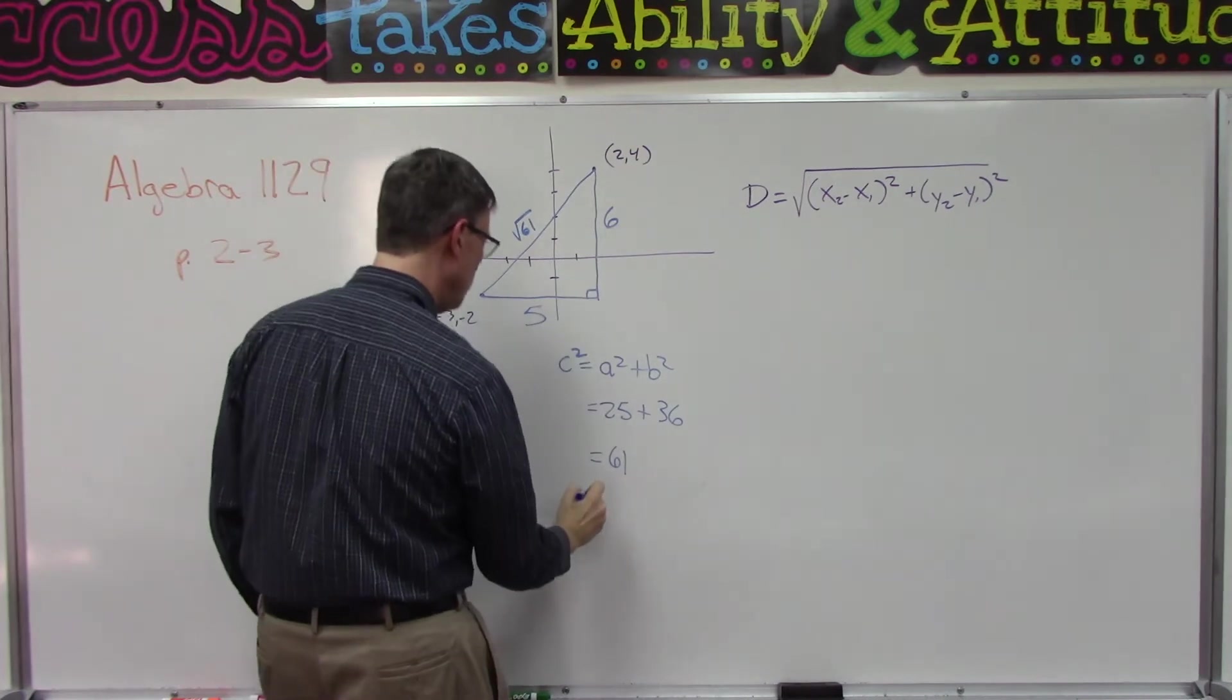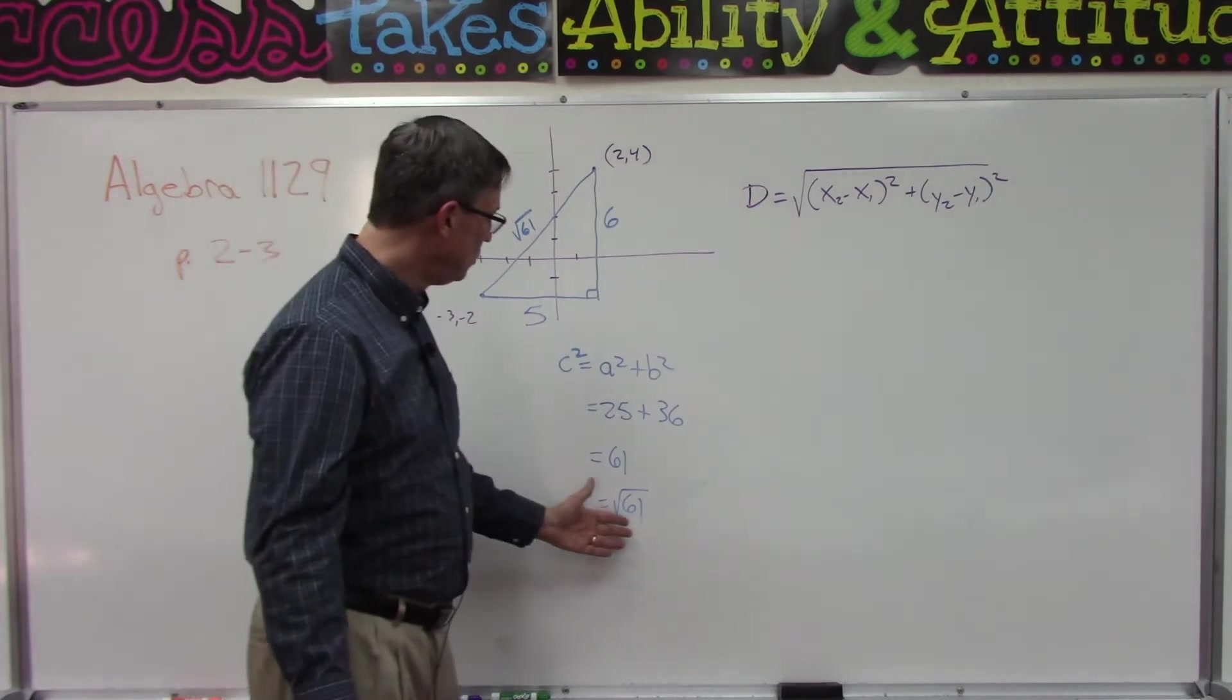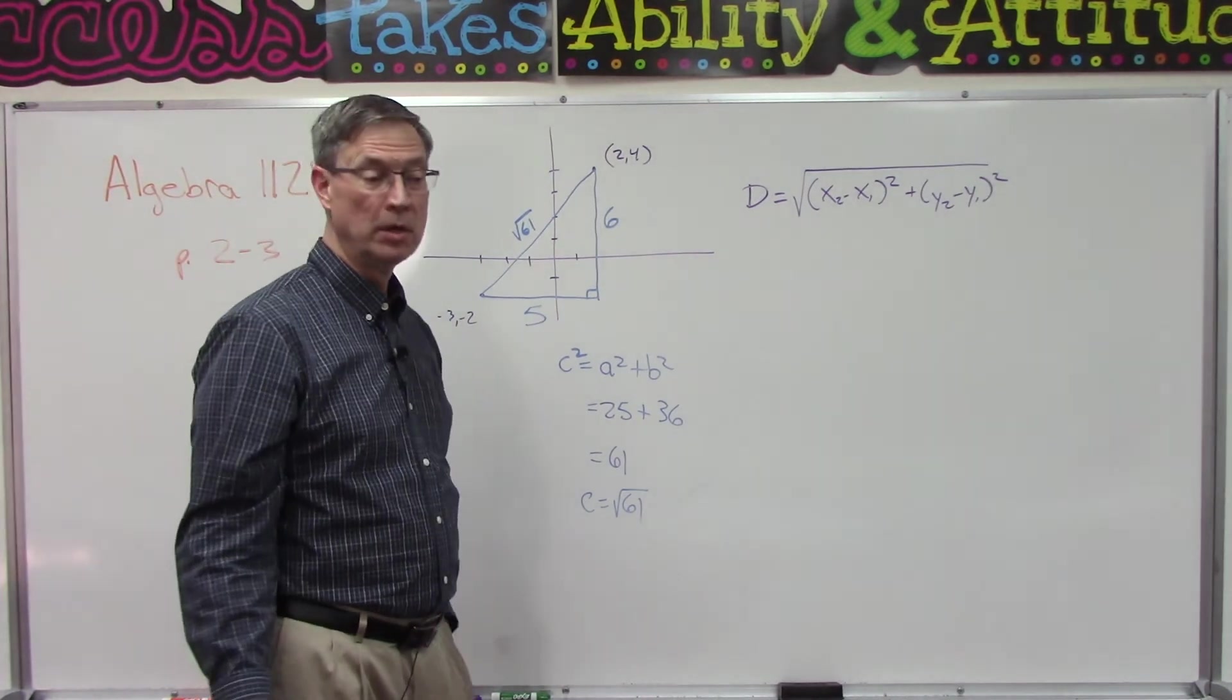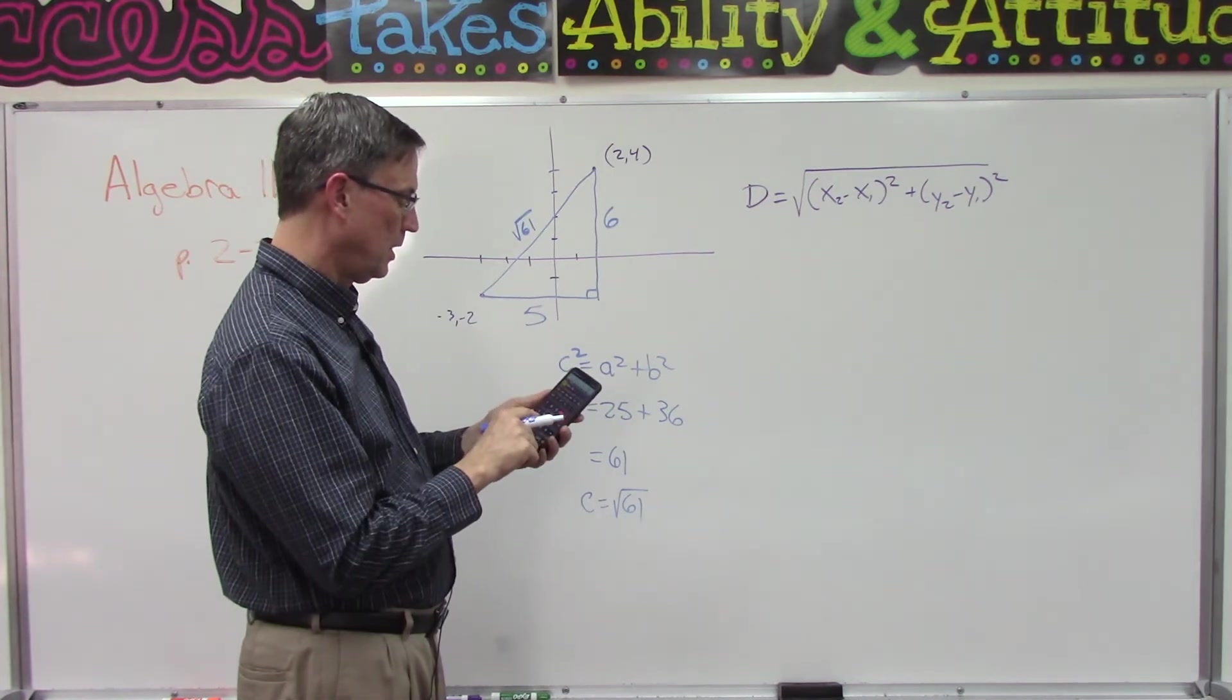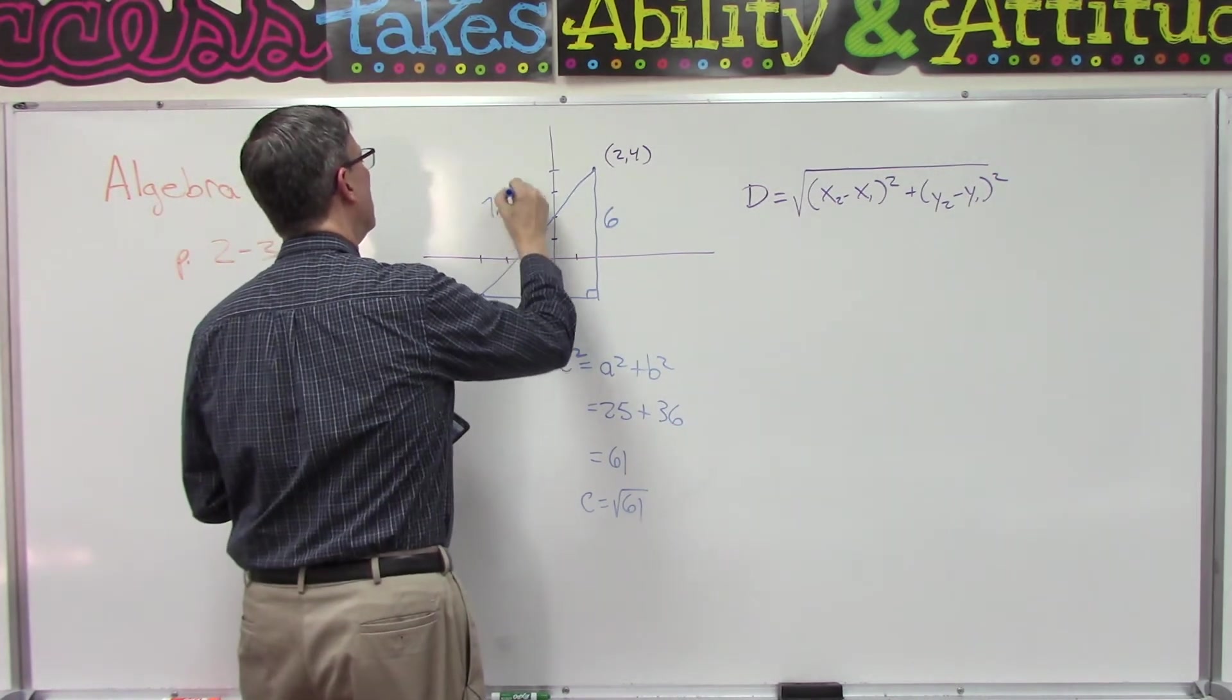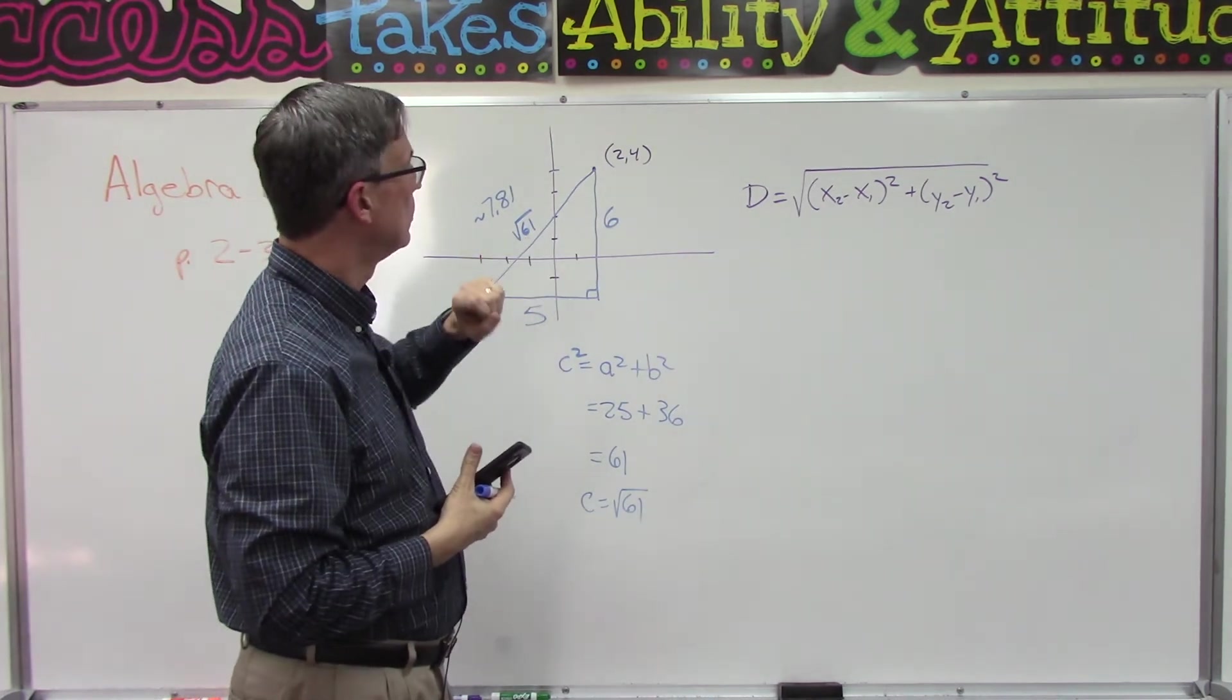So c squared is 61, which means that this hypotenuse would be the square root of 61. So sometimes when you do the math, it ends up being just a square root and we can't really simplify it. You could use your calculator - let me plug in 61, hit the square root key, so it'd be 7.81. So that would be a decimal approximation. That's not the exact value; the exact value is the square root of 61.